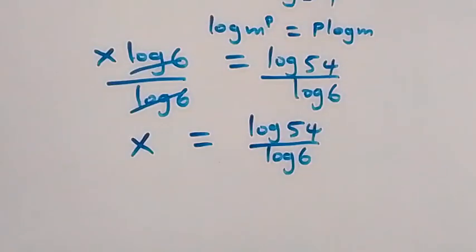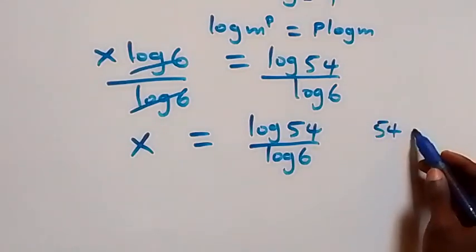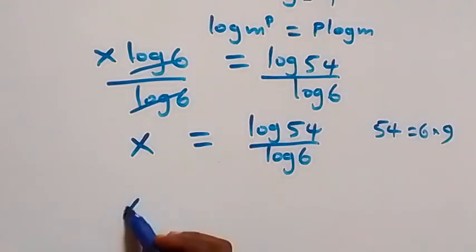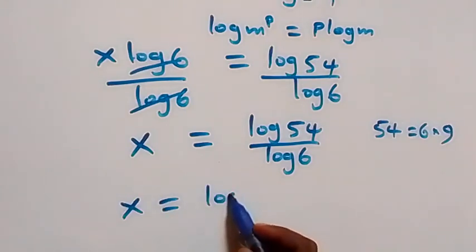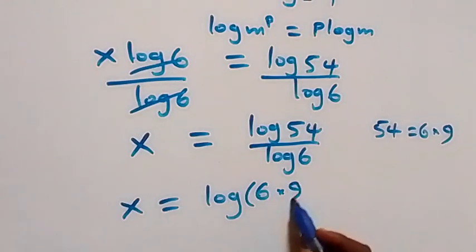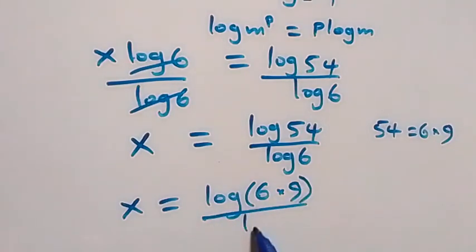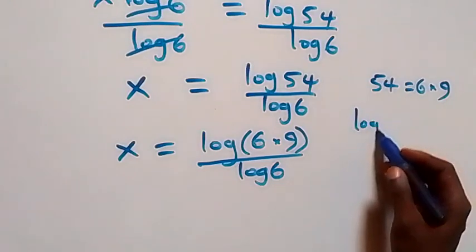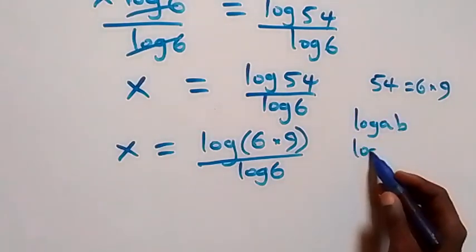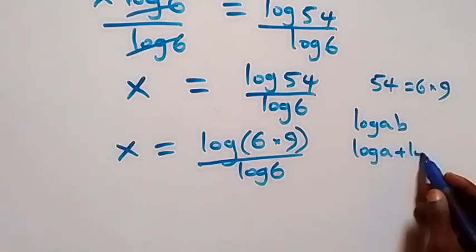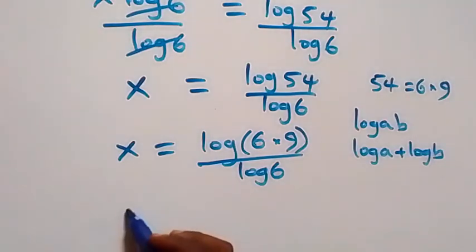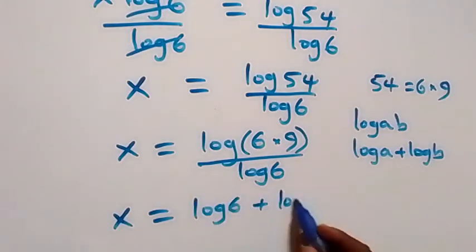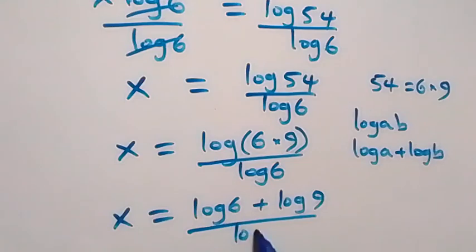We can reduce this further. 54 can be written as 6 times 9, so this becomes x equals to log of (6 times 9) over log 6. Applying the product law of logarithms — log(A times B) equals log A plus log B — we have x equals to log 6 plus log 9, all over log 6.